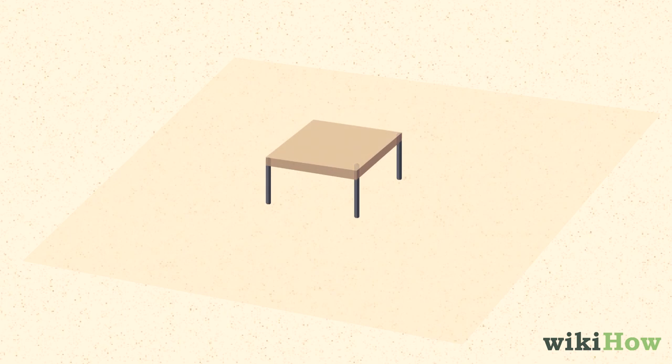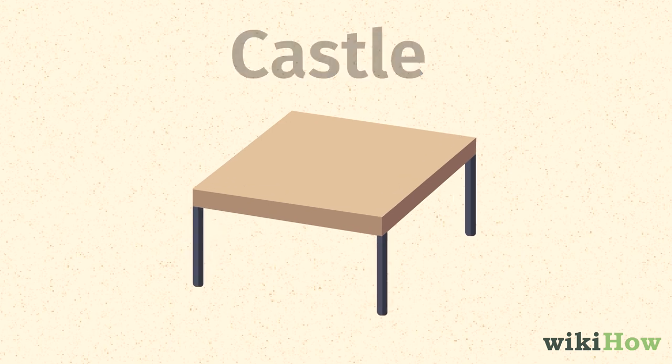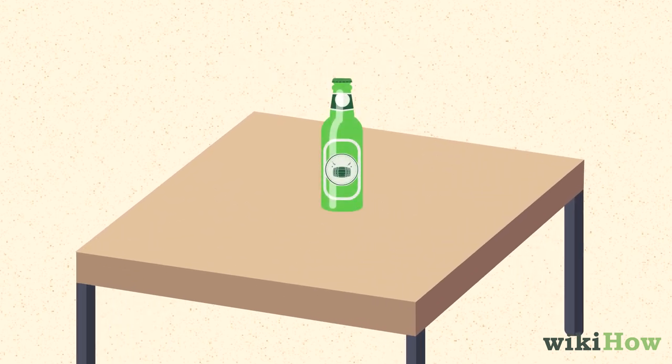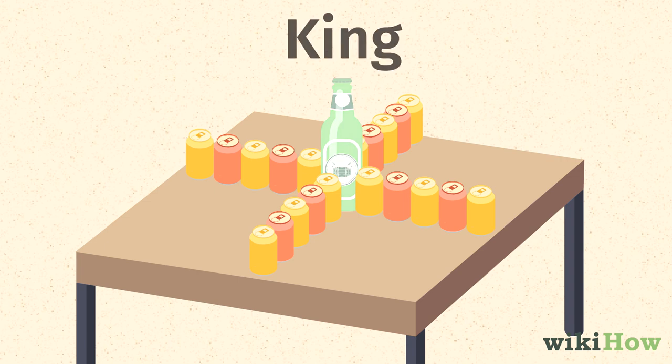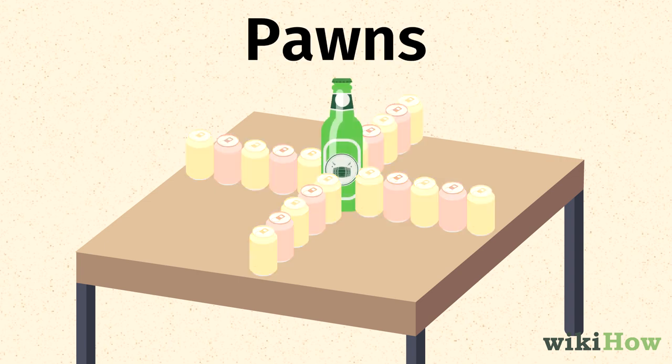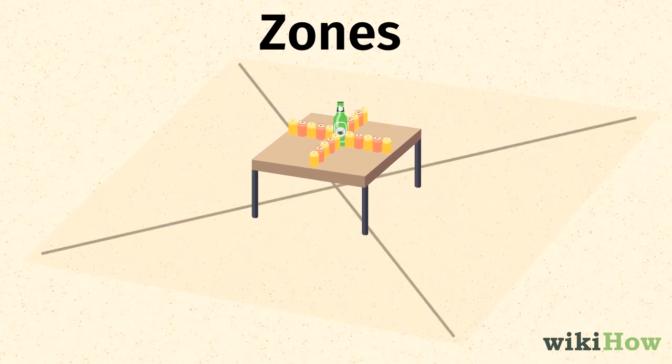Start by placing a small stand or table in the center of a wide open room. This will be the castle. Put a bottle of liquor in the center of the castle and arrange four lines containing at least five beers each branching off of the liquor bottle. The bottle is the king of the castle. The beers are the pawns, and the spaces between the lines of pawns are the four zones.